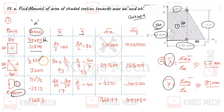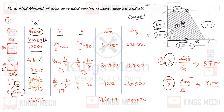For the triangle, the area is ½ × B × H = ½ × 120 × ... giving approximately 300 units. For the circle, the area is π·R².